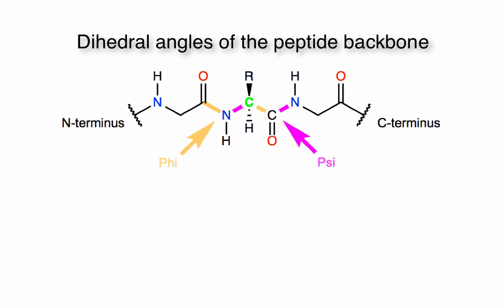Before we begin this assignment, it's important that you have the ability to draw peptides like the generalized peptide shown here. When you are asked to draw dihedral angles, knowing the connectivity between the atoms of the peptide backbone is essential.